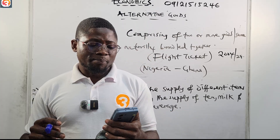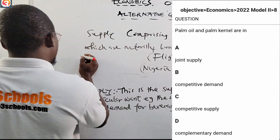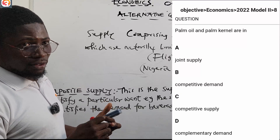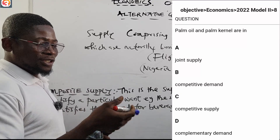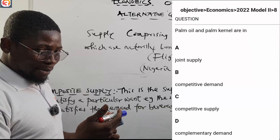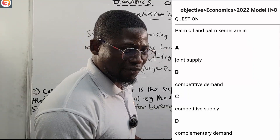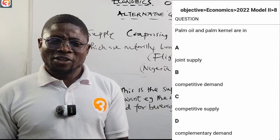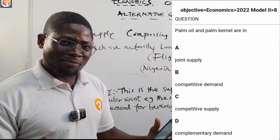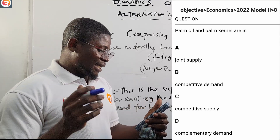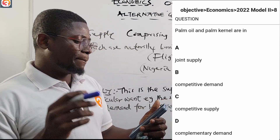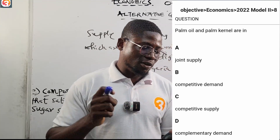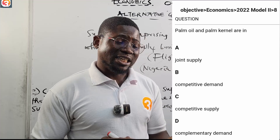2022, number 8: Palm oil and palm kernel. If you see a palm fruit, you get palm kernel from it and also palm oil — the red oil. You can get palm oil and palm kernel from that one tree and they go together. There's no way you can get palm oil and not get palm kernel. The options are A: joint supply, B: competitive demand, C: competitive supply, D: complementary demand. The correct answer is A — joint supply.